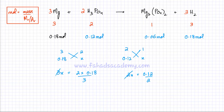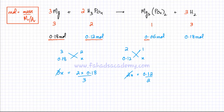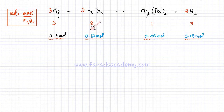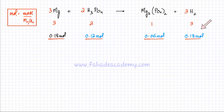So we've been able to figure out the moles of all substances. Given 0.18 moles of magnesium, that required 0.12 moles of phosphoric acid. The product magnesium phosphate came out to be 0.06 moles and hydrogen gas came out to be 0.18 moles. Now let's find the mass of all the substances.